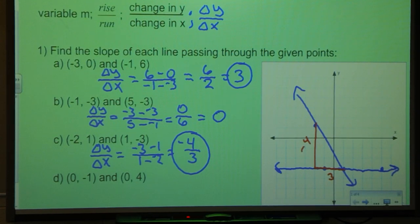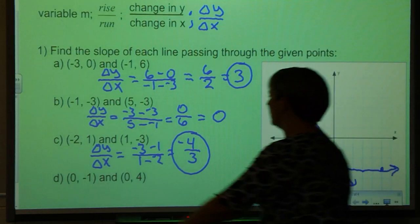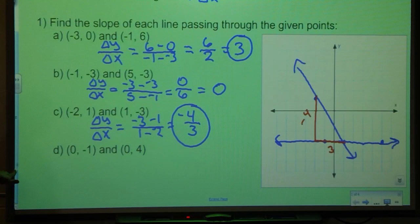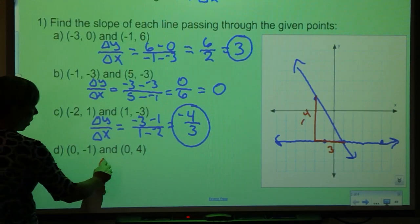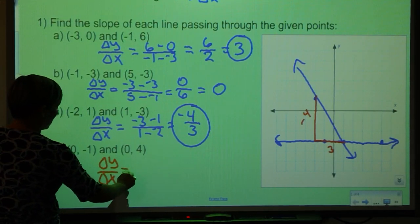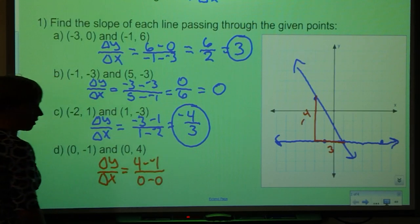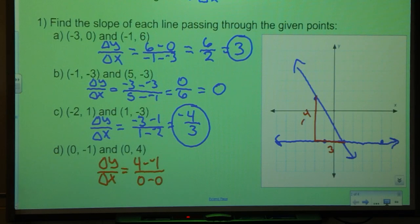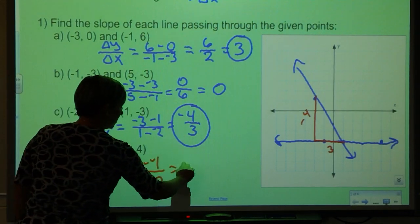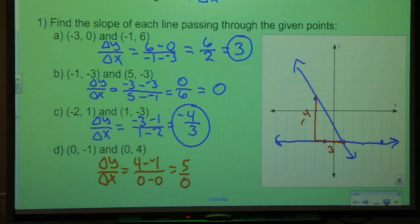Let's take a look at (0, -1) and (0, 4). Let's see what happens. When I find my change in y over change in x I'm going to have 4 minus -1 over 0 minus 0. 4 minus -1 would be 5. 0 minus 0 is 0. Hang on a second. Can we divide by 0? Can you have 5 pieces and split them into nothing? That doesn't make sense. So we call this an undefined slope.